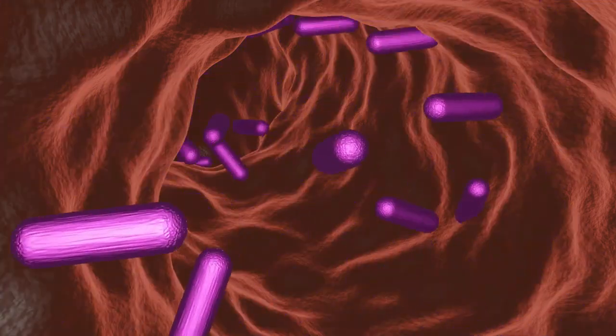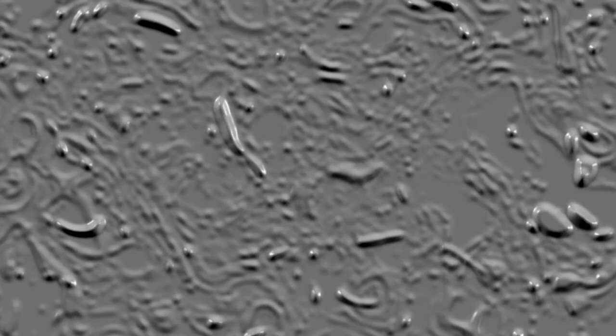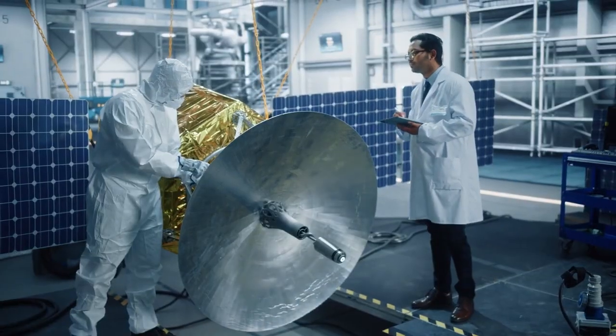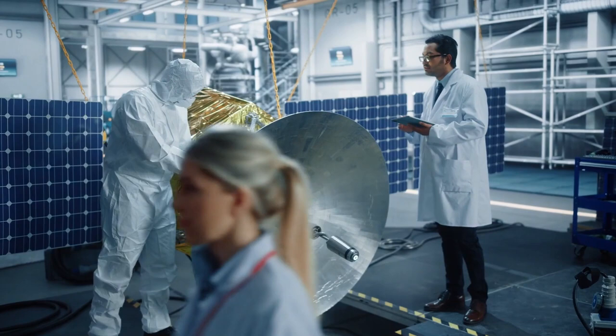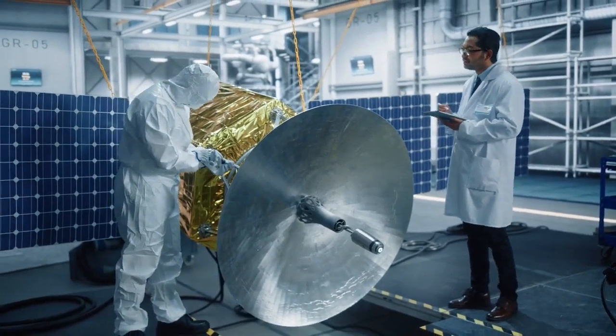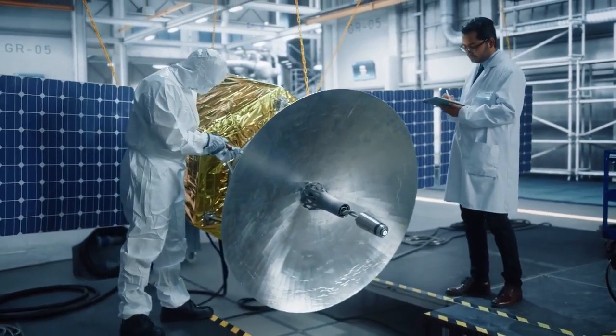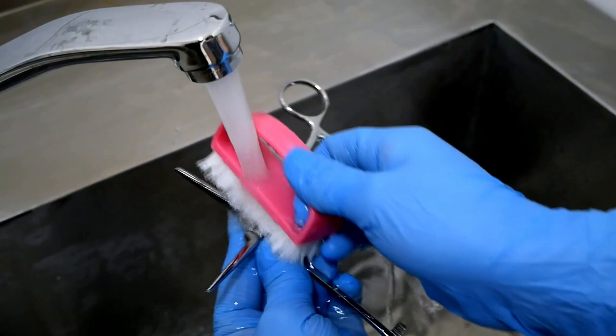These microbes weren't just surviving, they were thriving in these ultra-clean environments, and they had evolved traits that made them incredibly tough: resistant to radiation, the ability to survive vacuum conditions, and adaptations for withstanding UV exposure.